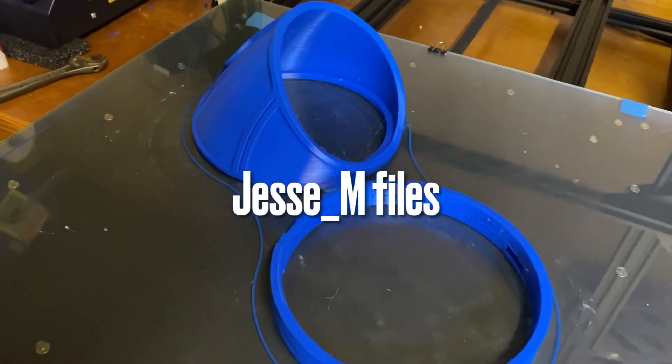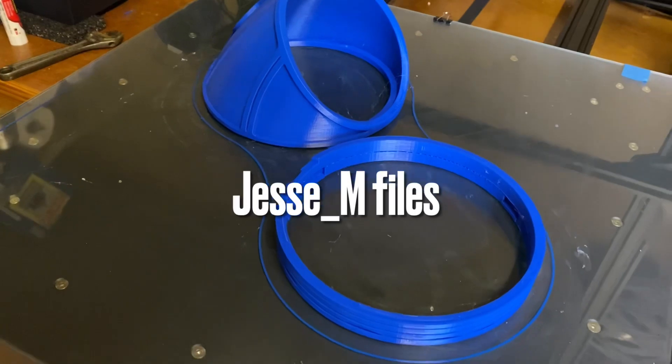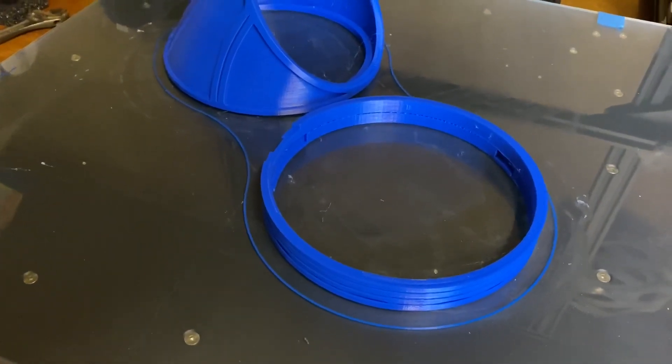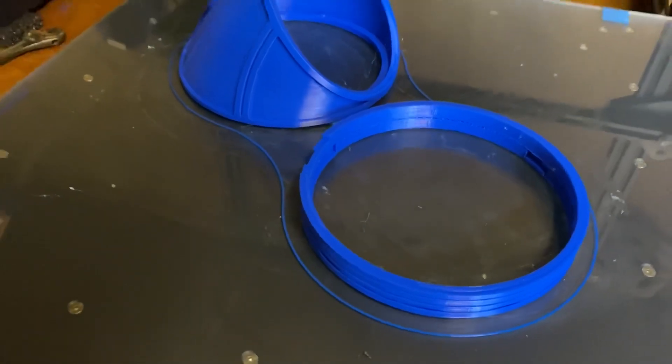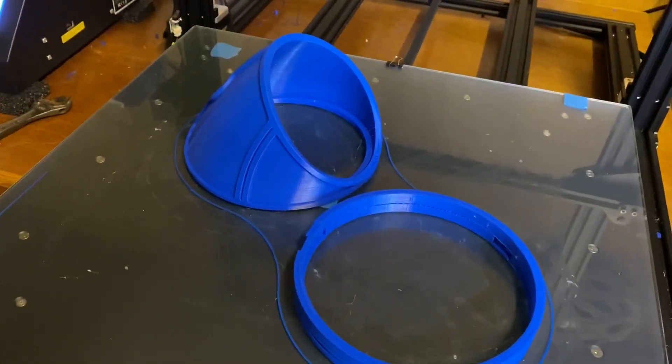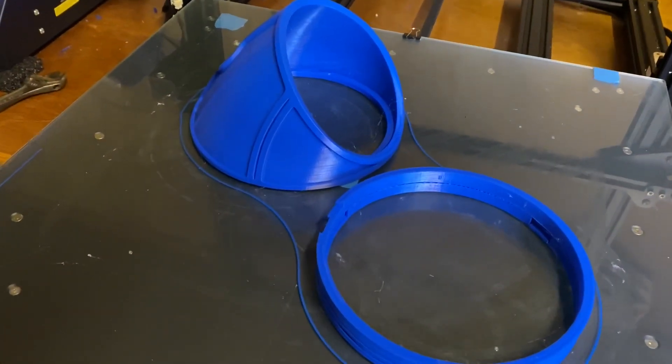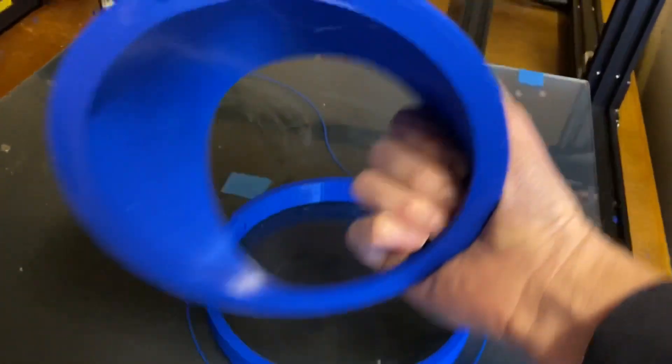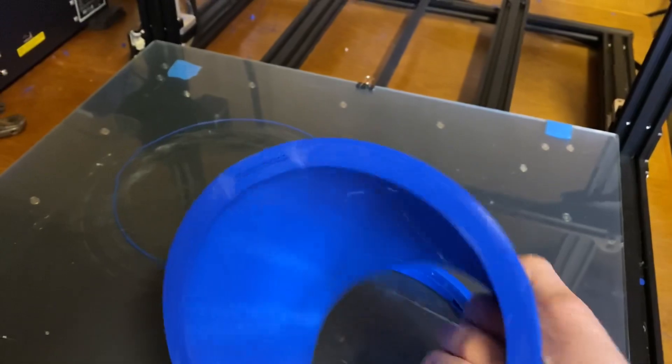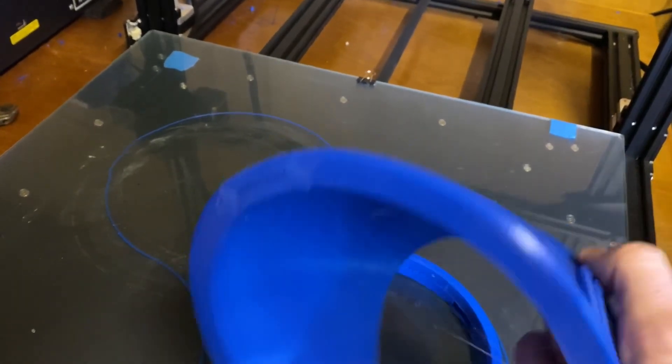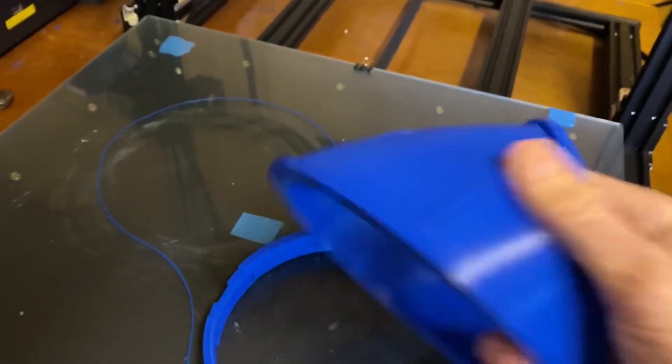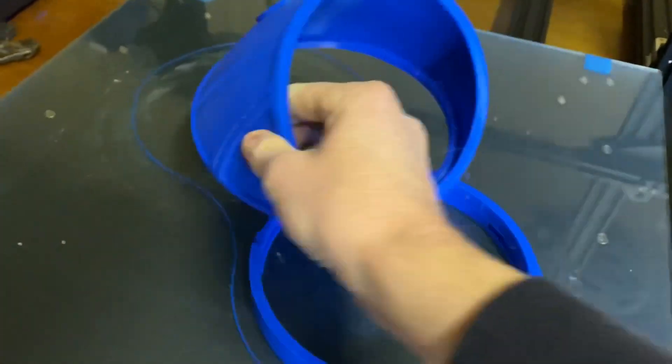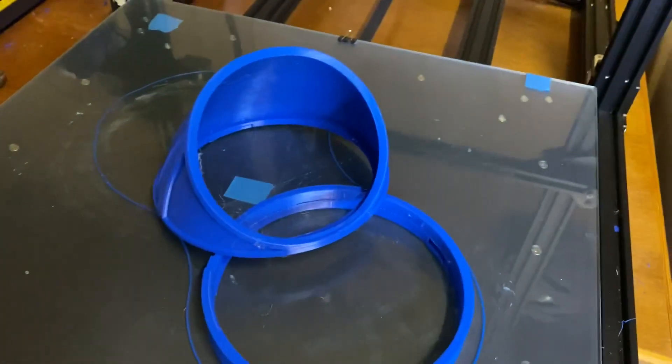These are the Jesse M files, printed at 107% size, and these are the version 2 files with hinge. You'll know what I mean if you've got the files downloaded. There's an option for a hinge or an option without hinge, and I've gone for the option with hinge, which is basically under that support material there. That's where the hinge will go. Anyway, very nice, and I'll do more updates soon. Speak to you later.